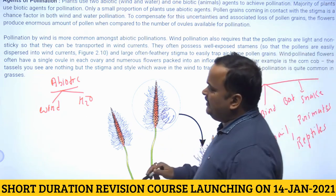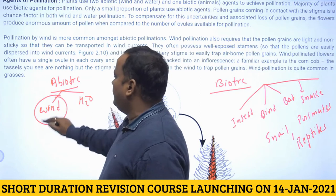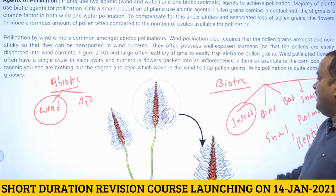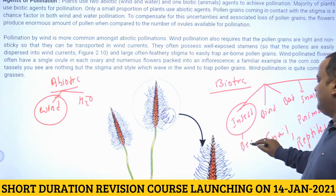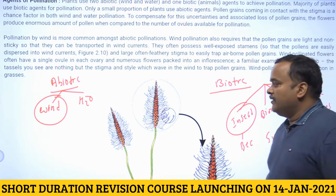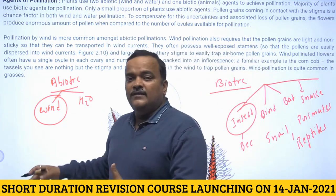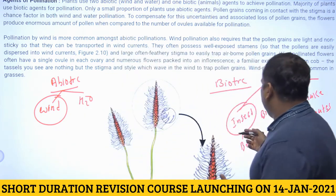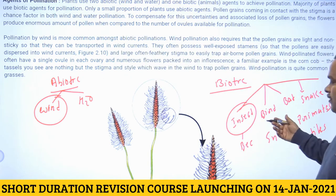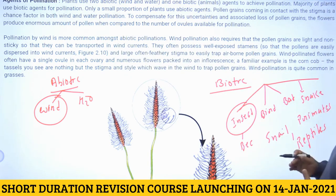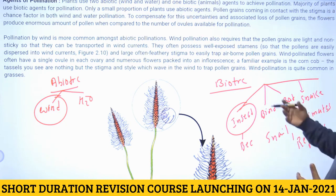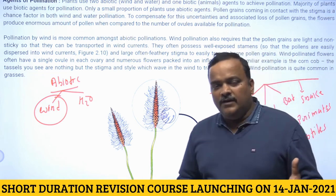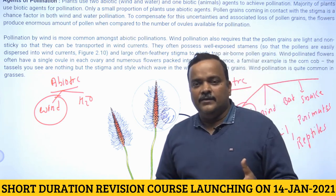Among abiotic agents, wind is the most common, and among biotic agents, it is insects — specifically the honeybee. Wind pollination is called anemophily, water pollination is hydrophily, insect pollination is entomophily, bird pollination is ornithophily, bat pollination is chiropterophily, snake pollination is ophiophily, and snail pollination is malacophily.